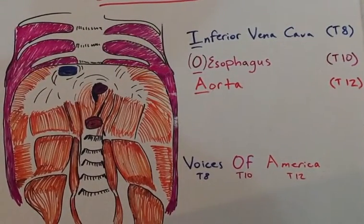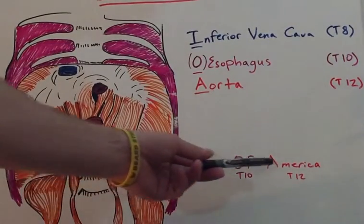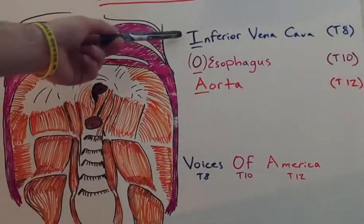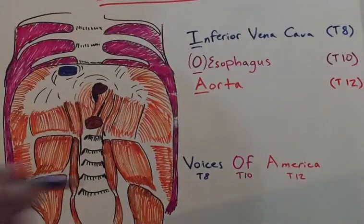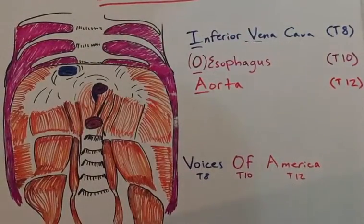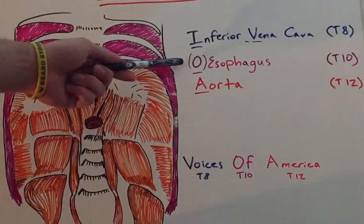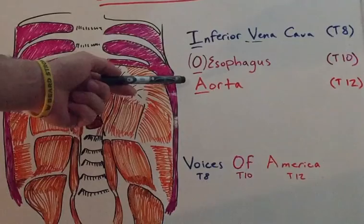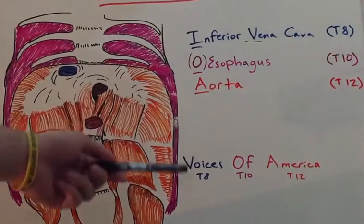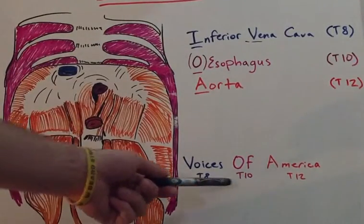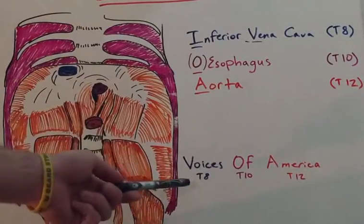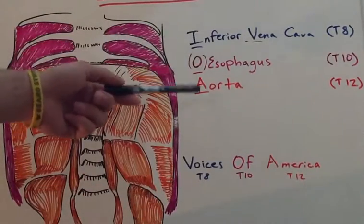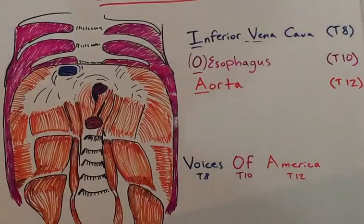There's a nice mnemonic to help you remember that, and that's Voices of America. V for inferior vena cava, O for esophagus in the classic British spelling starting with the O, and America stands for aorta. We can remember T8, T10, and T12 for Voices of America — vena cava, esophagus, aorta. And that is the thoracic diaphragm.